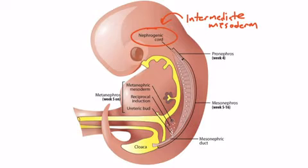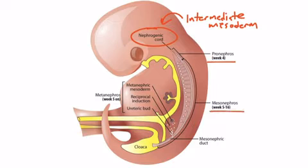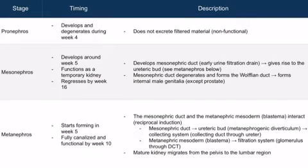This nephrogenic cord develops into the renal system by going through three different stages: the pronephros stage, the mesonephros stage, and the metanephros stage. This table will help us work through the stages of kidney development with important notes about their timing during development and certain defining features.